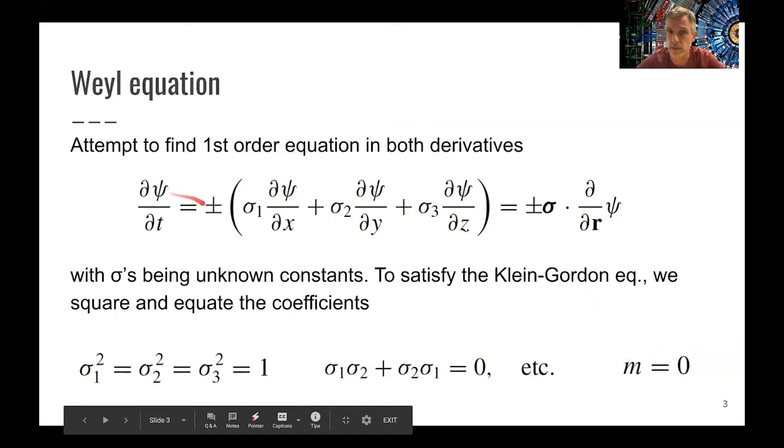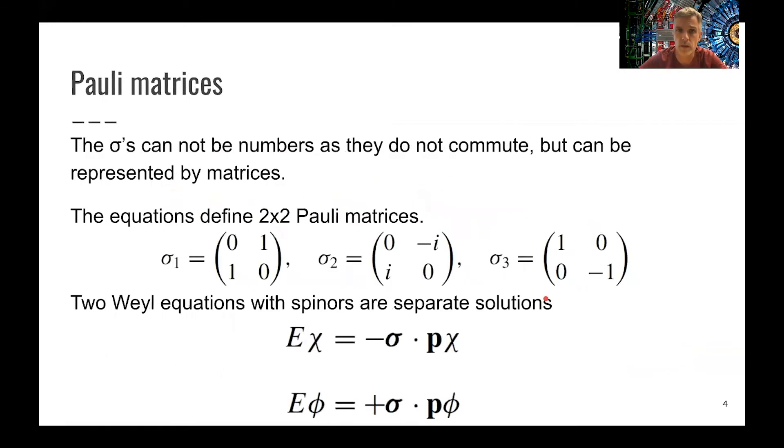So this equation here is true for a massless particle. All right. So if we then try to find solutions for those relations, we find that they can be fulfilled by the two-by-two Pauli matrices.